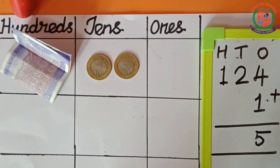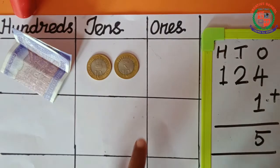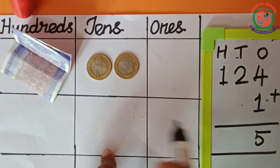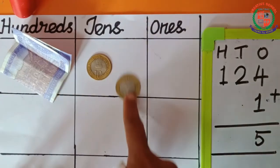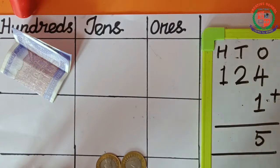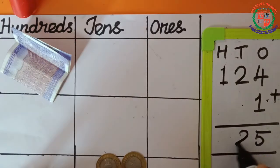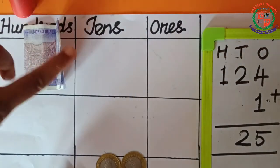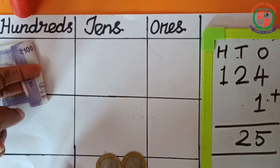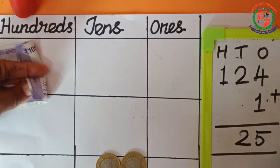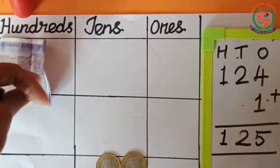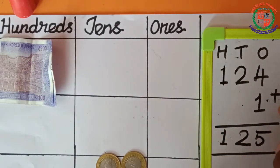In the 1s place, we wrote 5. Next, in the 10th place, shall we add? Here, nothing is there to add. Only 2 tens are here, so the answer is 2. In the 100th place, shall we add? How many 100s are here? Only 1, so the answer is 1. So, the answer is 124 plus 1 is equal to 125.